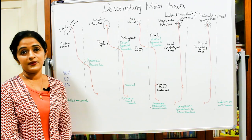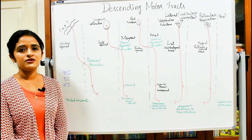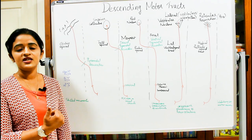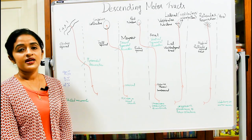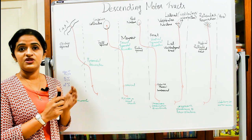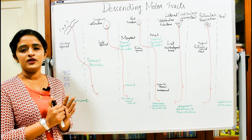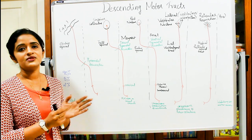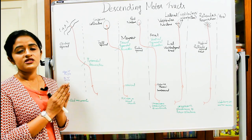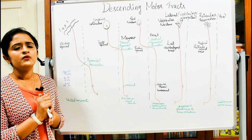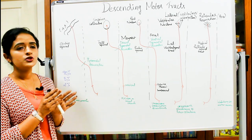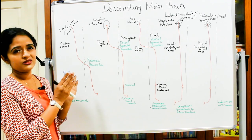This session is about the descending tracks, which are motor tracks, because they arise from the higher centers of the brain and terminate in the spinal cord. They can arise from different parts of the higher centers, like the cerebral cortex or different parts of the brain stem. The point of termination will be the anterior horn cells or sometimes the lateral horn cells of the spinal cord's gray matter.